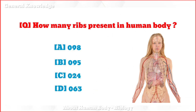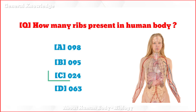How many ribs are present in the human body? The correct answer is option C: 24.